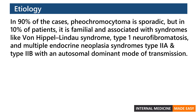In 90% of the cases, pheochromocytoma is sporadic, but in 10% of patients it is familial and associated with syndromes like von Hippel-Lindau syndrome, type 1 neurofibromatosis, and multiple endocrine neoplasia syndromes type 2a and 2b, with an autosomal dominant mode of transmission.